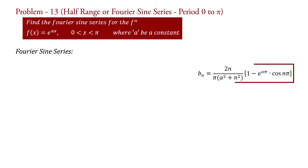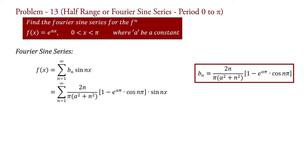Now substituting this value of bn into the Fourier series equation, we get f(x) = summation n=1 to infinity of (2n/π) · 1/(a² + n²) · [1 − e^(aπ) cos(nπ)] · sin(nx).